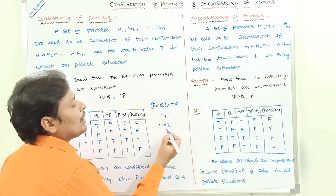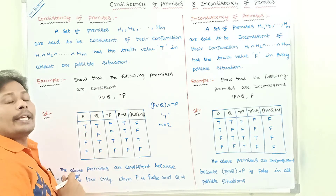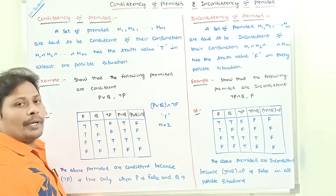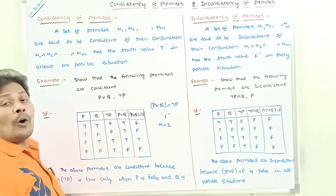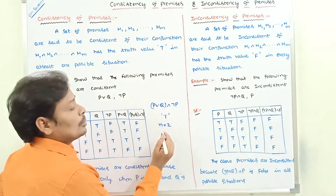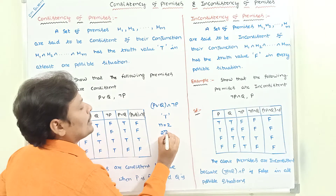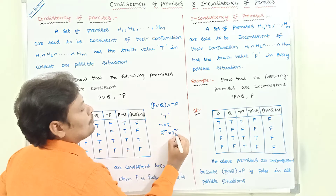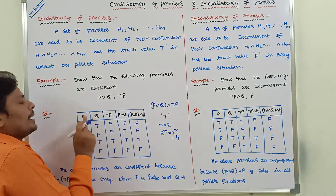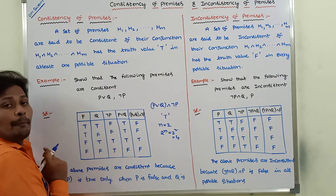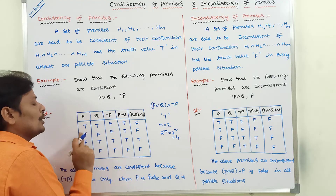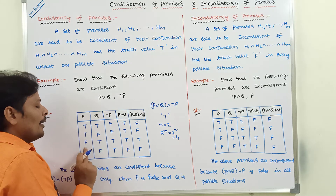The number of statement variables in the given premises is n = 2. The number of possible truth values when n = 2 is 2 power n, that is 2 power 2, which equals 4 possible truth values. Taking the two statement variables P and Q, the possible truth values are: true-true, true-false, false-true, false-false.